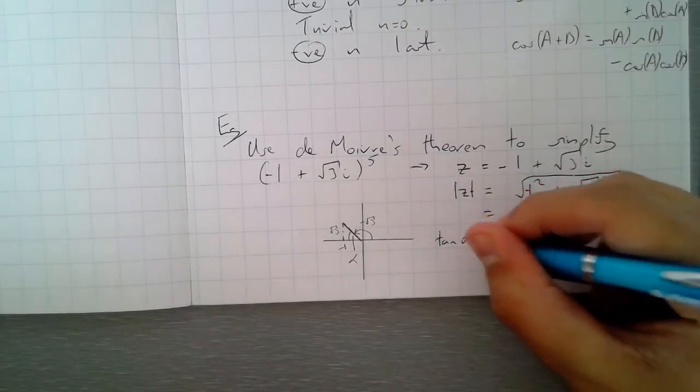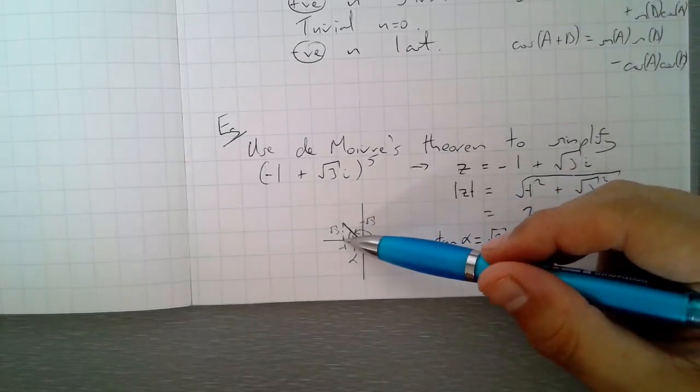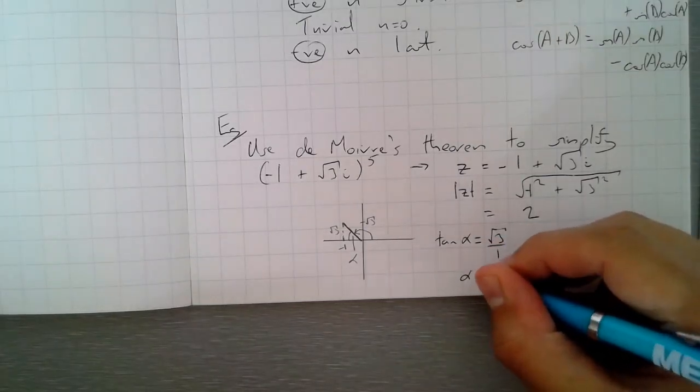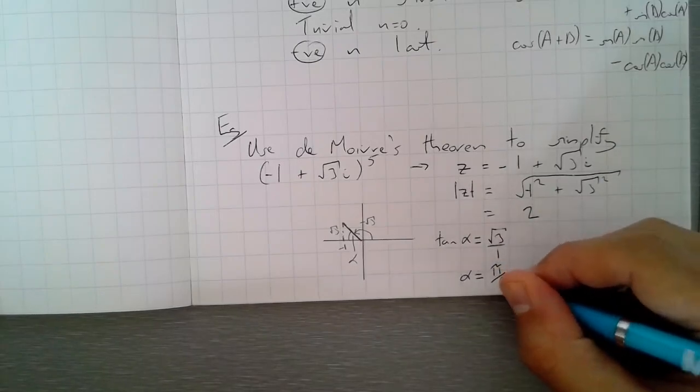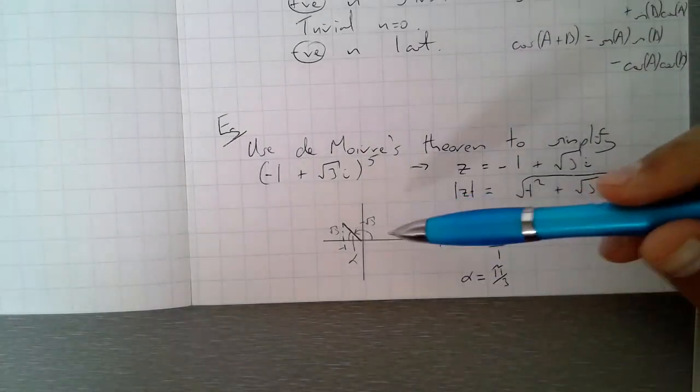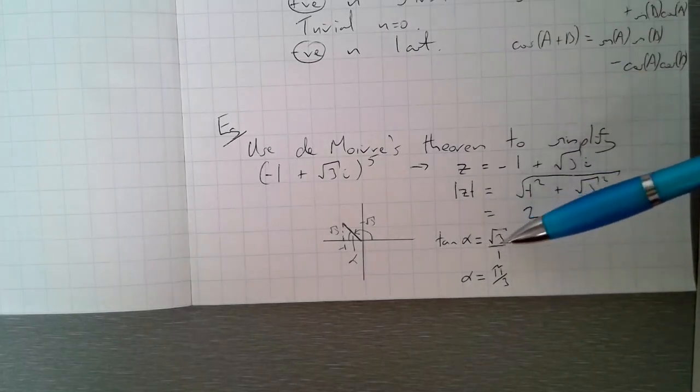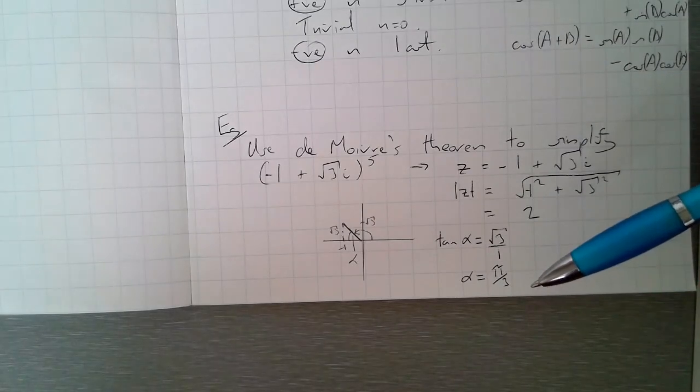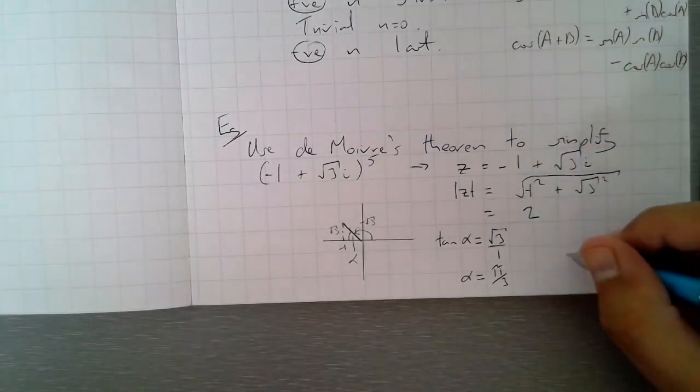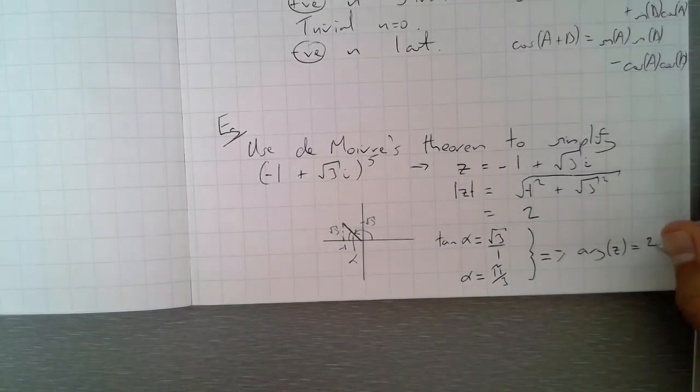So z is minus 1 plus root 3i. So we're looking for this argument here. If I use this right angle triangle, I'm going to be able to find this angle, and let's just call that angle there alpha. So tan of alpha is equal to root 3 over 1. Yes, that's minus 1, but the length of this triangle is 1. And if I've got tan of alpha equals root 3, then that must mean that alpha is going to be π over 3. So that implies that the argument of z is equal to 2π over 3.